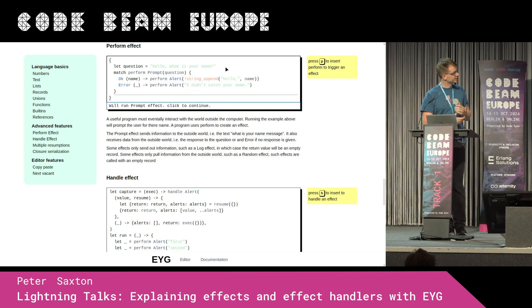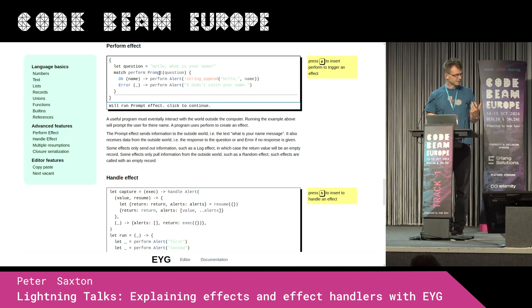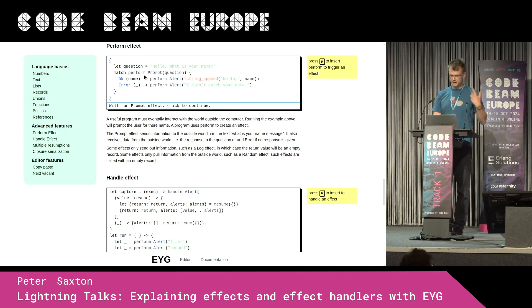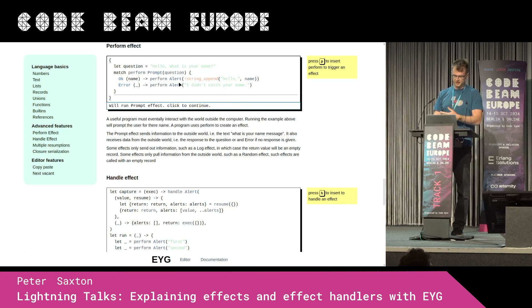They're not necessarily just in the type system — they're actually a runtime feature as well. So if, for example, we have this program here, where we have this `perform` keyword — perform means we're going to do an effect, and then effects have a name. So here we're going to do a prompt effect, and here we're going to do an alert effect.